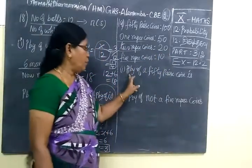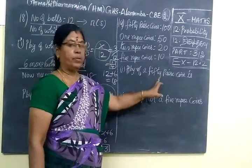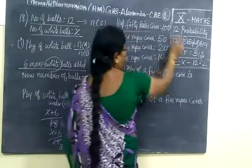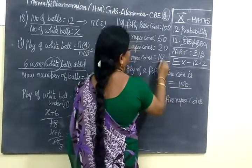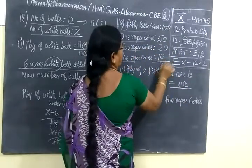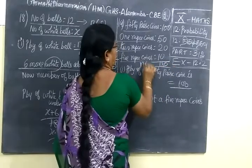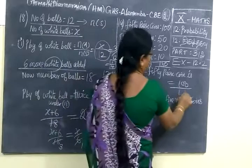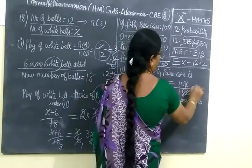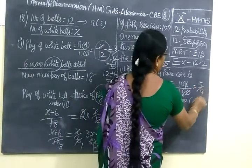We want to find the probability of 50-paise coins. So 100 by n of s. N of s is total number of coins, so you are getting 180 as n of s. So you write 180. Answer is 5 by 9.